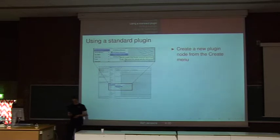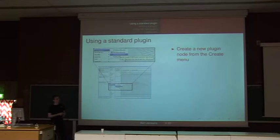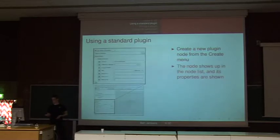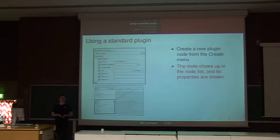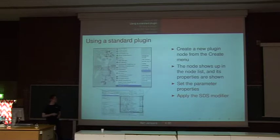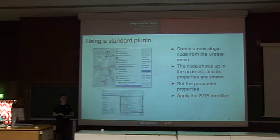So how do we use a standard plugin? We start from the Create menu, which is a big menu containing all the plugins available. In this case, we will import an Alias Wavefront object, so we go to the MeshReader category and choose the Alias Wavefront Loader plugin. Once we have chosen this plugin, we get to see the Properties panel, which shows all the inputs and parameters for the plugin. Most importantly, the filename. Once we set the filename, the object gets loaded and shown in the viewport. We can also apply an additional modifier by right-clicking the model and applying the Subdivision Surface modifier, which creates an interactive smoothed version of the imported object.